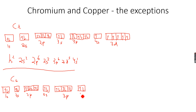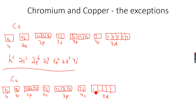So we fill 4s, and we are left with 9. Now we come to 3d because 3d fills after 4s always. So 3d will be 1, 2, 3, 4, 5 — we have half-filled all of them. Now we start filling them again, and we are left with 4 electrons: 1, 2, 3, and 4.